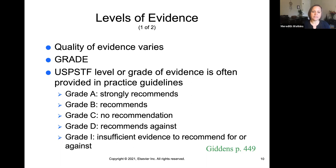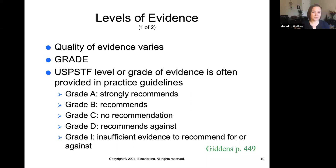We can grade evidence based on practice guidelines. A grade A means the evidence is very well recommended and highly reliable. Grade B is pretty good. Grade C means there's no recommendation either way. Grade D recommends against it — you shouldn't really trust that it's true. And grade I means insufficient — there just wasn't enough evidence to recommend for or against the findings of that study.